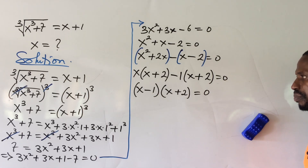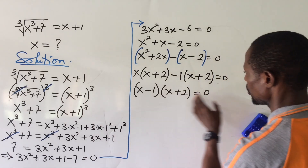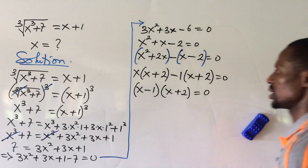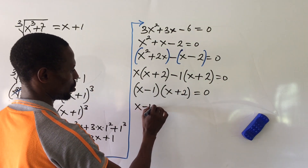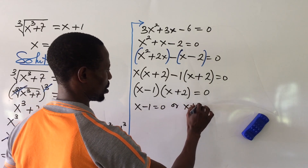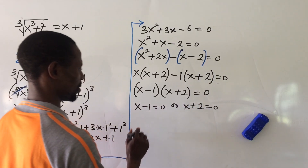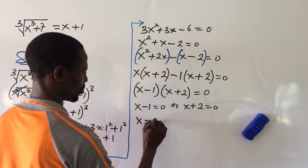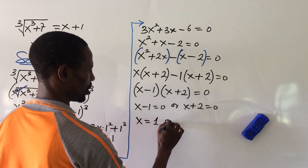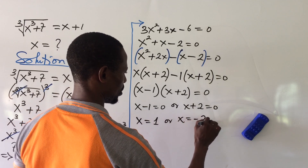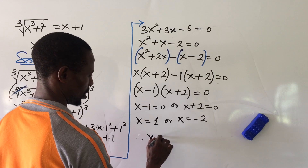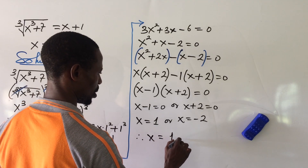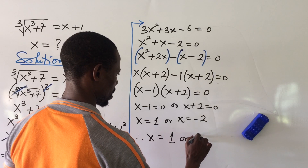Applying the zero product rule: x − 1 = 0 or x + 2 = 0, which gives x = 1 or x = −2.